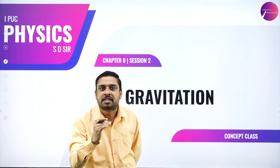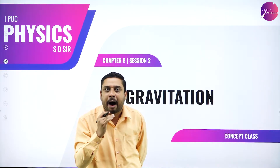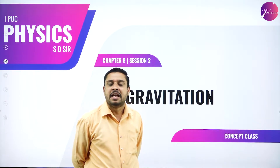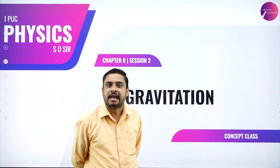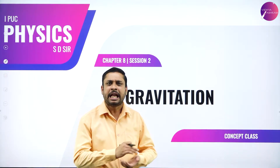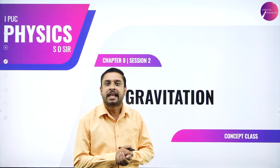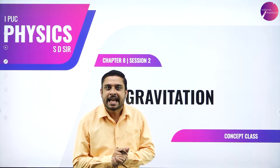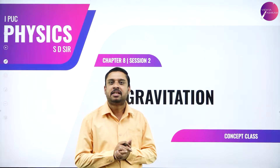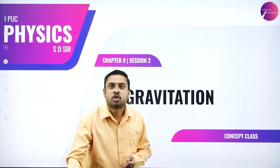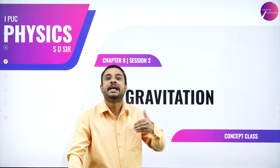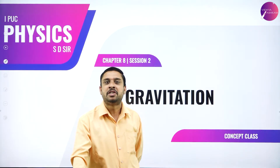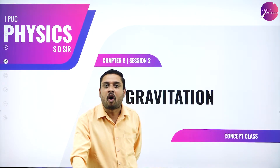Gravitational force exists between two particles by virtue of their mass. We also defined gravitational constant, which is the force acting between two particles each of mass 1 kg when separated by a distance of 1 meter. We also understood acceleration due to gravity, which does not depend upon the mass of the interacting body but depends only on the mass of the earth.